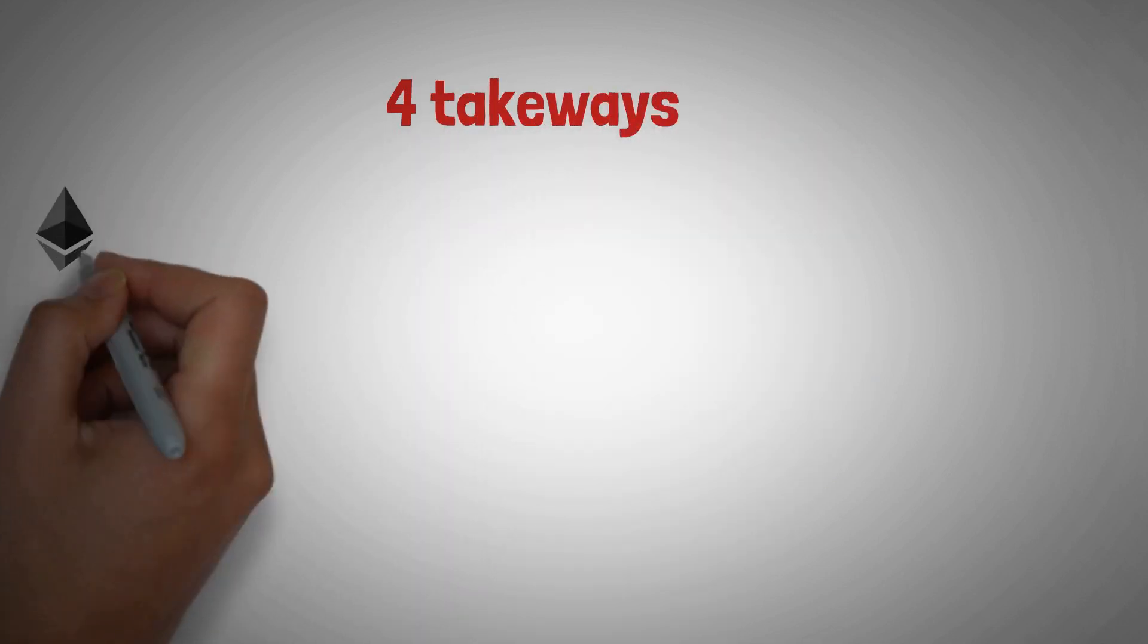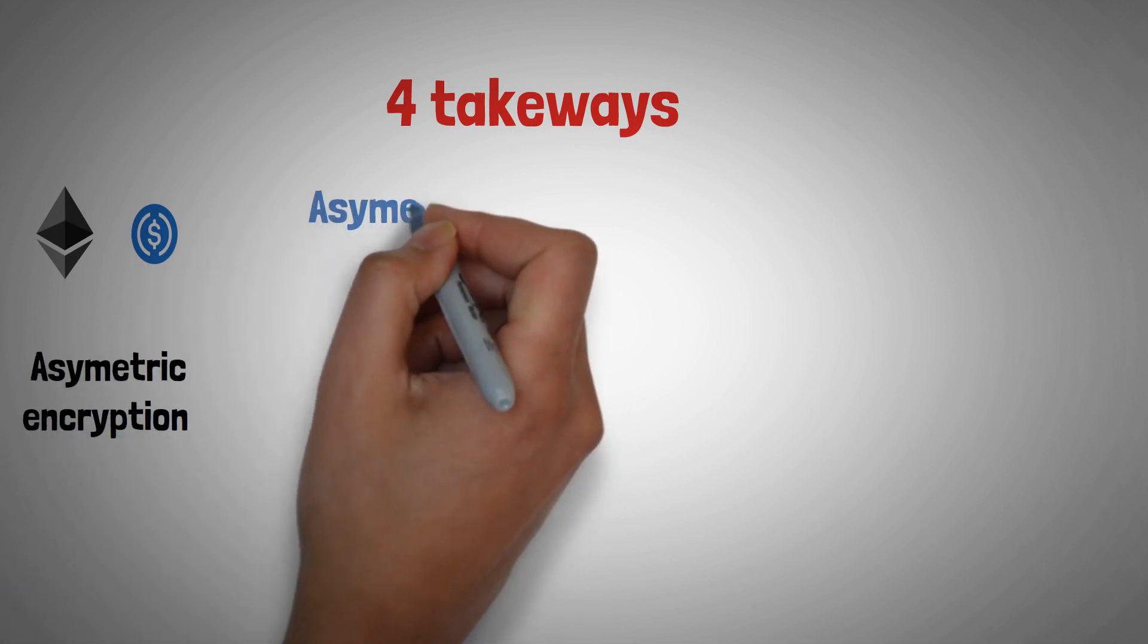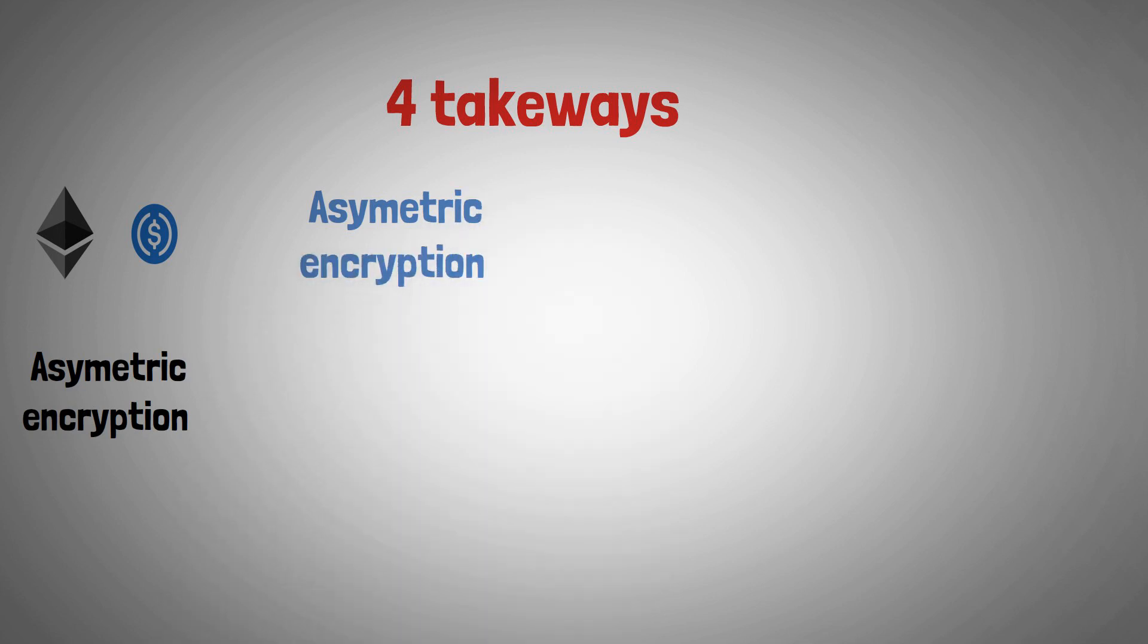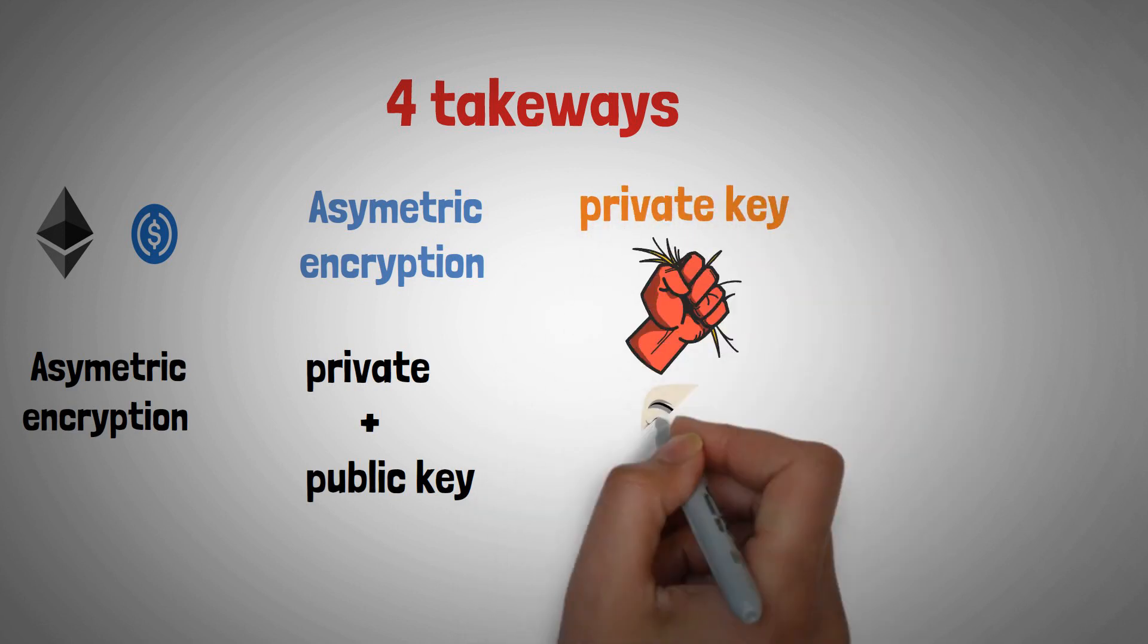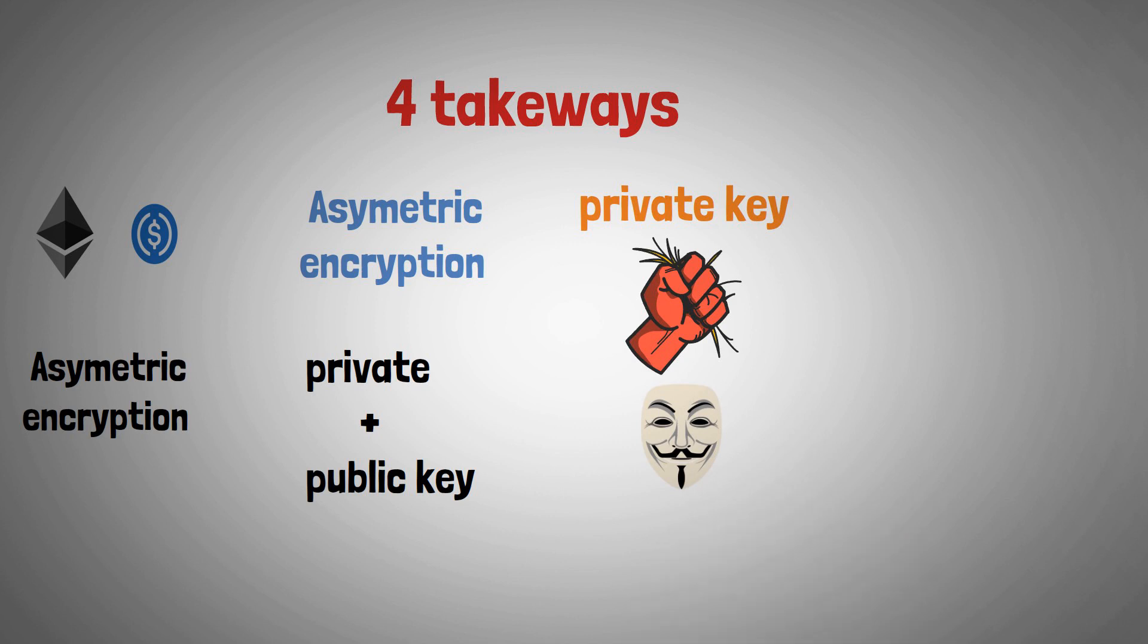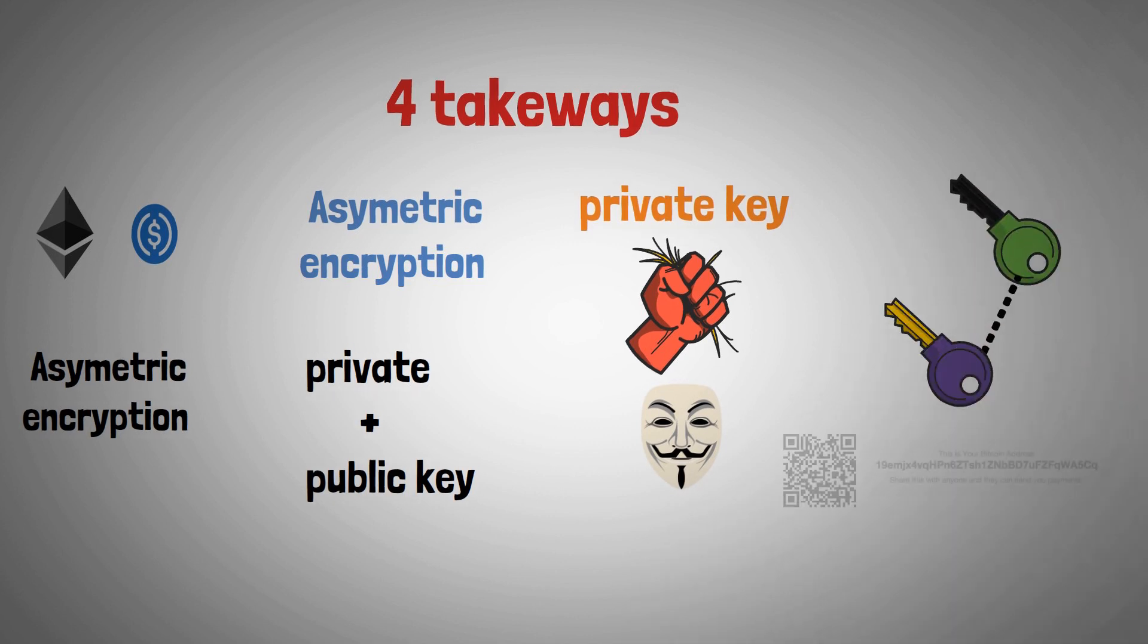These are four takeaways of the video: Cryptocurrencies use asymmetric encryption. Asymmetric encryption uses both private and public key. Private key should be kept secret by its owner to avoid being robbed or getting in trouble. Private key is linked to a public key and the last one is hashed and turned to a public address.